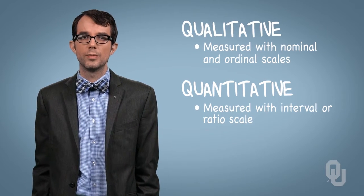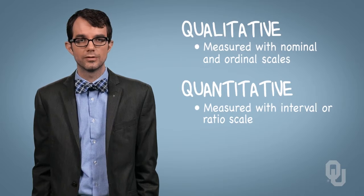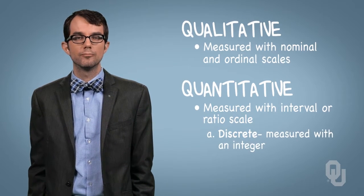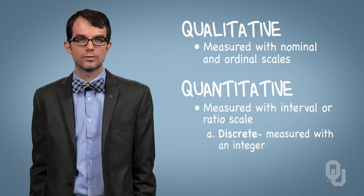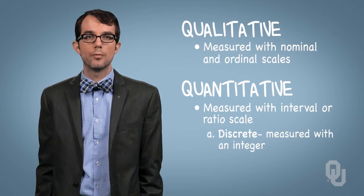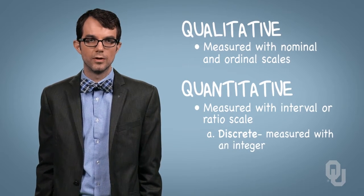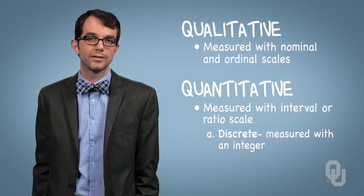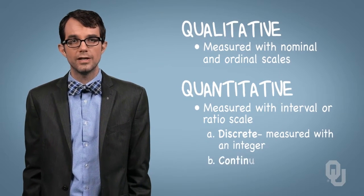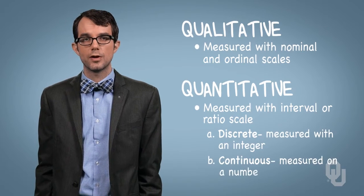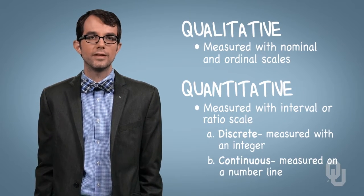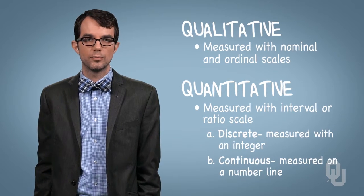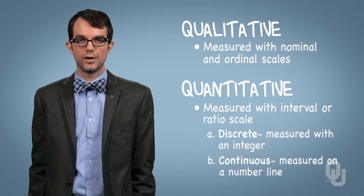Quantitative data are further described as being either discrete or continuous. Discrete variables are measured as integers and tend to represent counts — for example, the number of cantilever bridges in Oklahoma would be measured with an integer, as there can't be 8.34 cantilever bridges. Continuous variables are measured on a continuous number line — for example, the weight that a cantilever bridge can withstand can take on several decimal places and is thus a continuous variable.